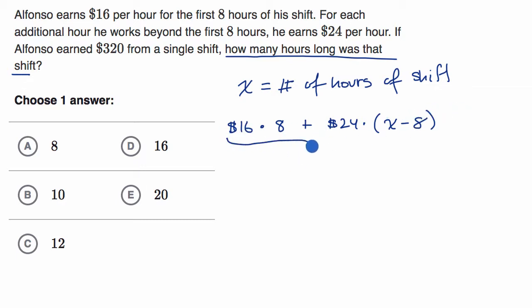And so this expression right over here, this is going to be the total amount that he's going to make for the shift and they tell us that that is $320. That is going to be equal to $320. And so now we have this algebraic expression and we can solve for X, the number of hours of his shift.